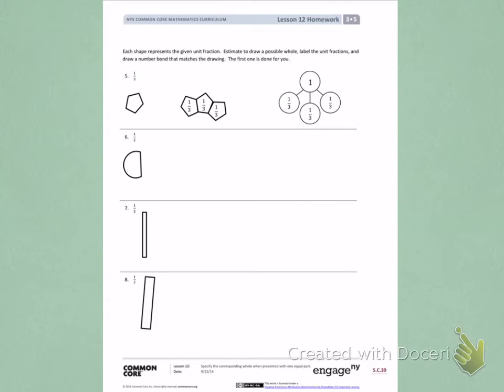This is Module 5, Lesson 12 Homework, Page 2. Each shape represents the given unit fraction. Estimate to draw a possible whole. Label the unit fractions and draw a number bond that matches the drawing. The first one is done for you.